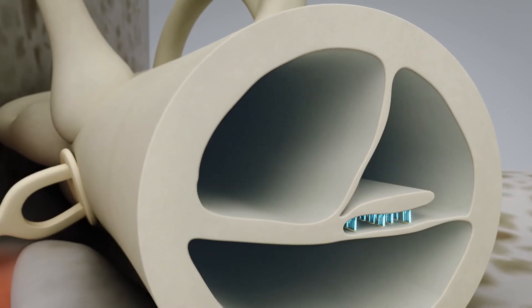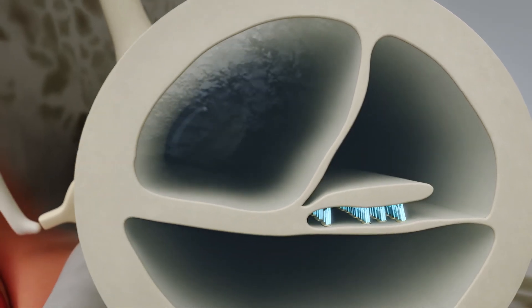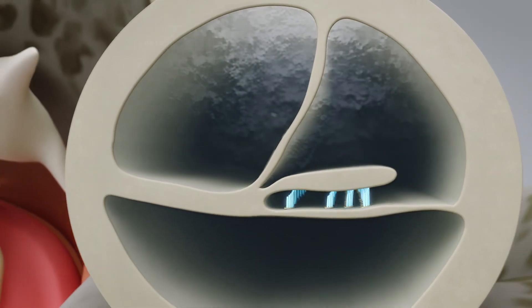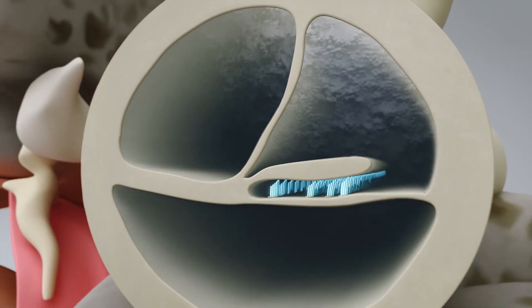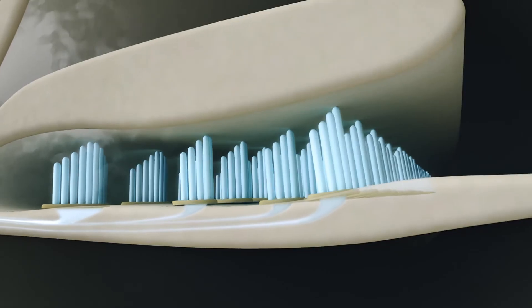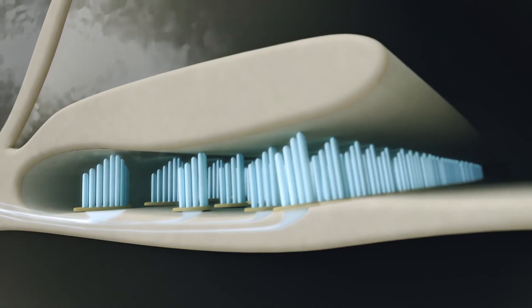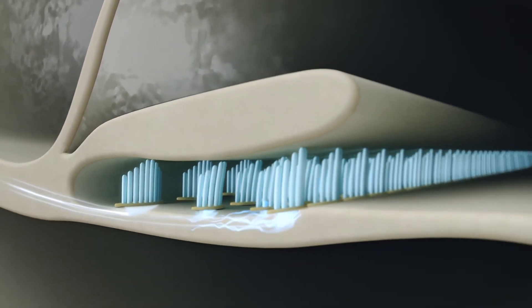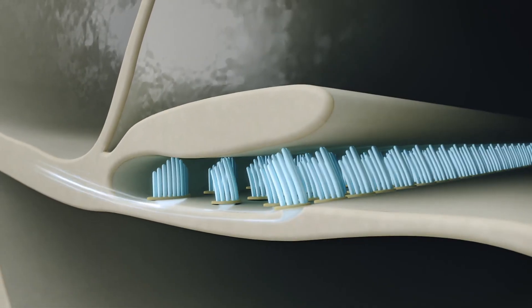When the sound waves vibrate the oval window, the fluid begins to move, thus setting minute hair cells in motion. These hair cells then transform the vibrations into electrical impulses, which are sent via the auditory nerve and onto the brain.